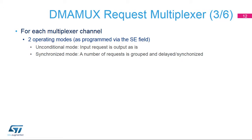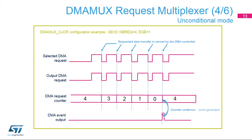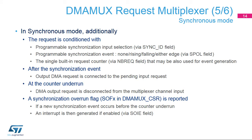For each multiplexer channel, there are two operating modes programmed via the SE field: unconditional mode, where the input request is output as is, and synchronized mode, where a number of requests is grouped and delayed or synchronized. When the request multiplexer channel is configured unconditionally (SE equals zero), the DMA request is transmitted as is and paced by the DMA controller. When the DMA controller is served for a data transfer, the DMA request is deasserted and the built-in DMA request counter is decremented. At counter underrun, if enabled via the EGE field, an event can be generated.